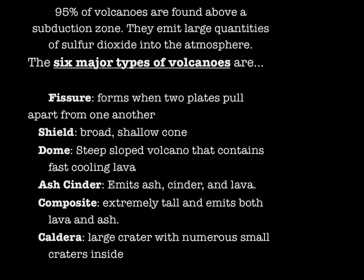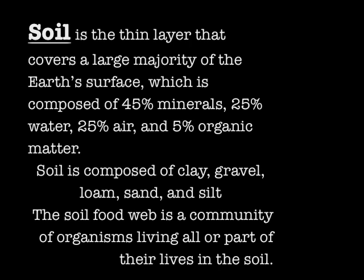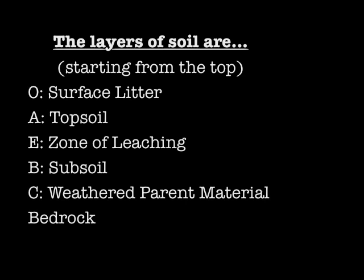Soil is the thin layer that covers a large majority of the Earth's surface. Soil is composed of clay, gravel, loam, sand, and silt. The soil food web is a community of organisms living in soil. The layers of the soil are the O, A, E, B, C, and bedrock horizons.